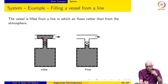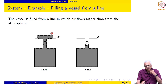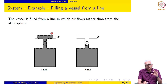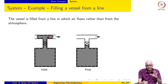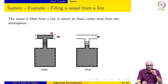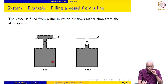The question of what should be the shape of the system boundary arises. We will justify this later, but for now the shape of this part of the system boundary is actually immaterial. This is what the system looks like at the beginning of the process.